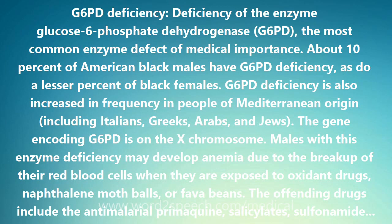About 10% of American black males have G6PD deficiency, as do a lesser percent of black females. G6PD deficiency is also increased in frequency in people of Mediterranean origin, including Italians, Greeks, Arabs, and Jews.